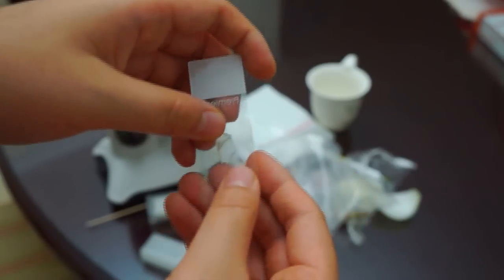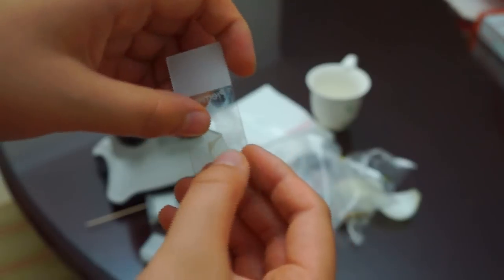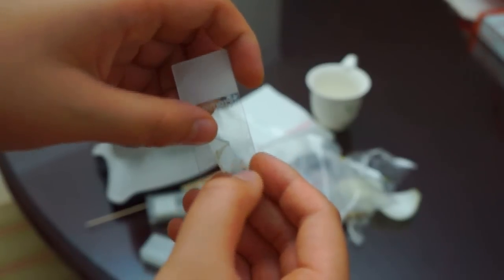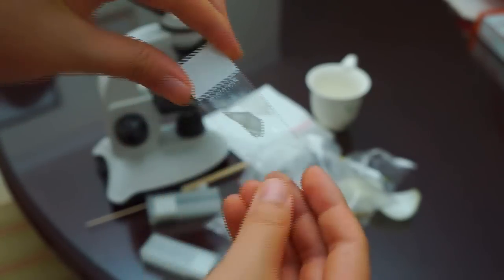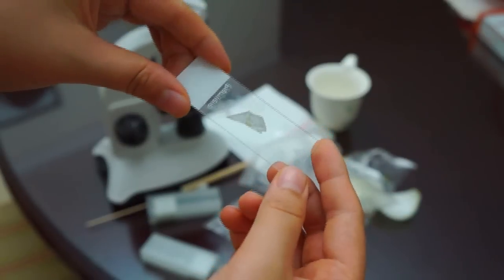Now we have the outer part, transparent part, and we'll pull it. We're going to spread it all across the slide to have it really thin, so we can check it out easily.